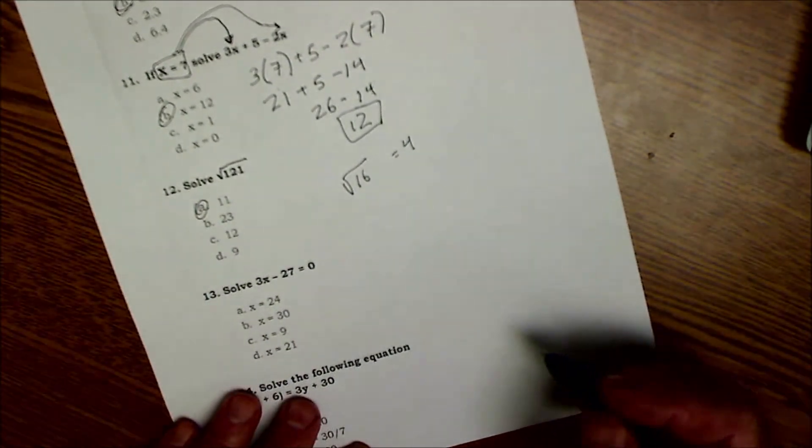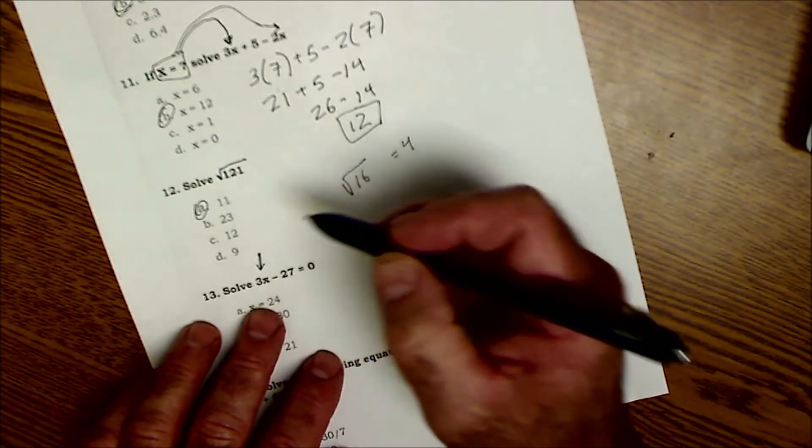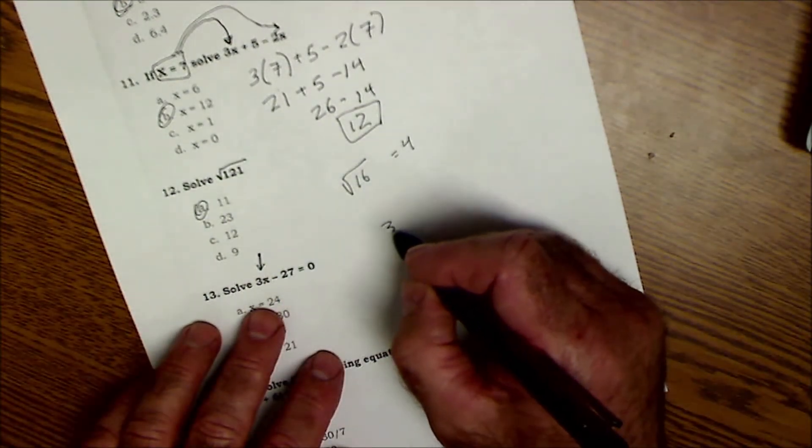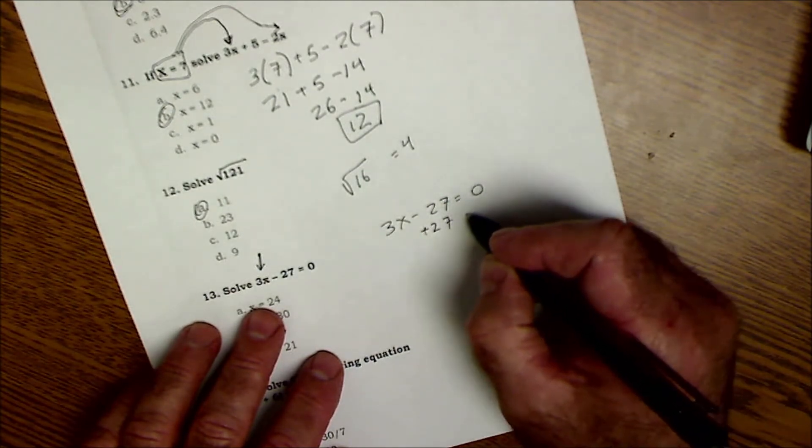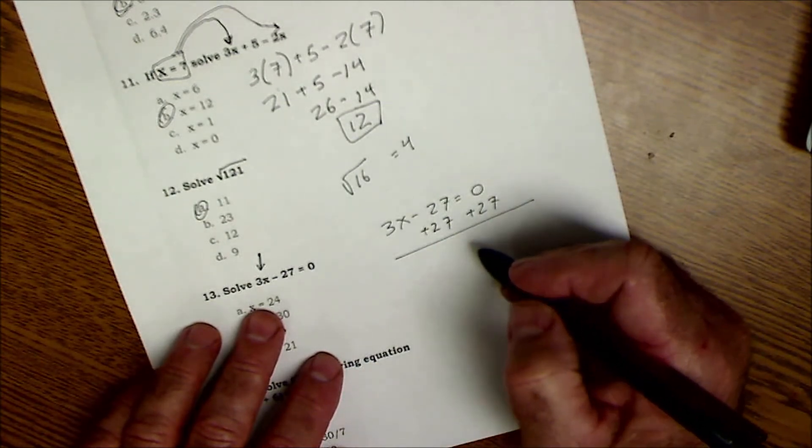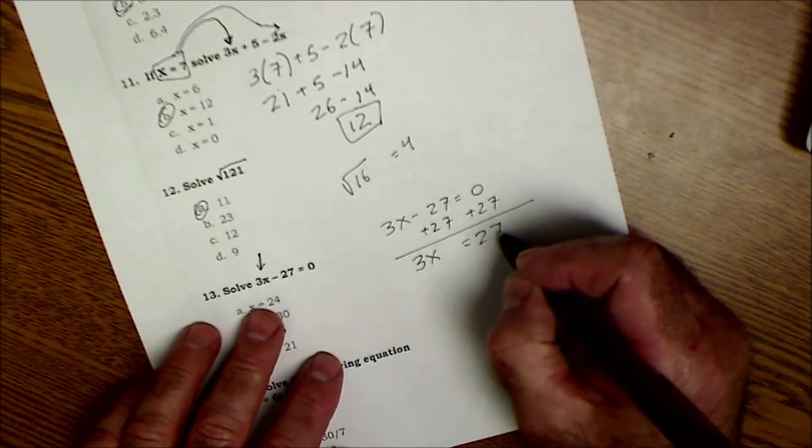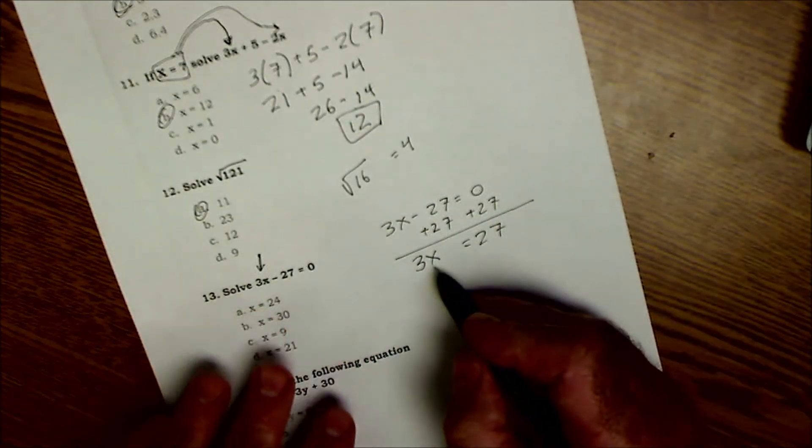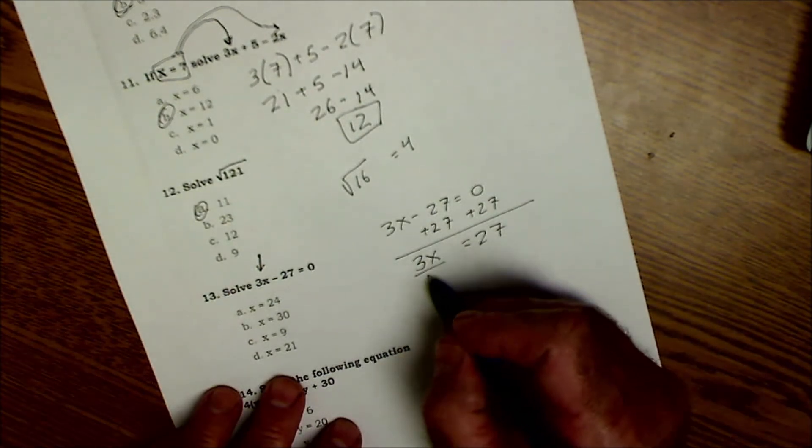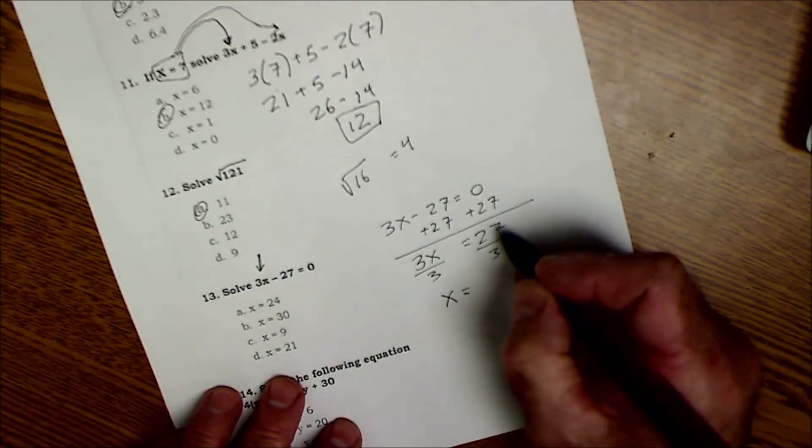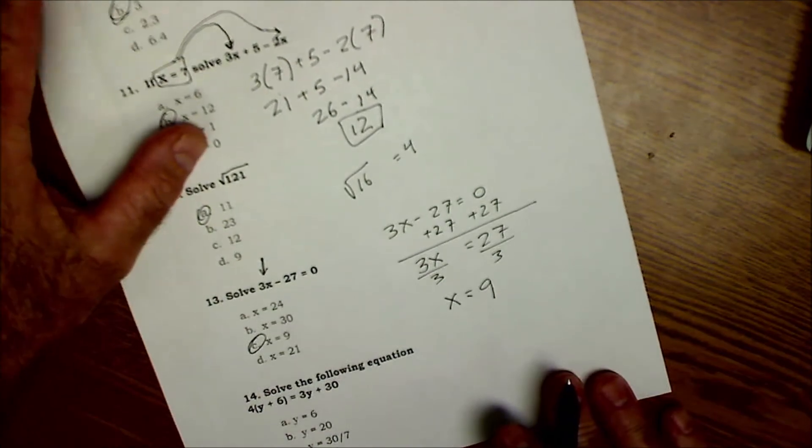Number 13 is an algebraic equation. The point here is to get this x right here all by itself. So the way you're going to do that is you're going to add 27 to both sides to start with. So I'm going to add 27 to both sides. I do whatever I want as long as I do it to both sides of the equation. That's going to leave me with 3x equals 27. Still trying to get this thing by itself. It's saying 3 times what equals 27, so I'm going to divide both sides by 3 to get x equals 27 divided by 3, or 9, answer C.